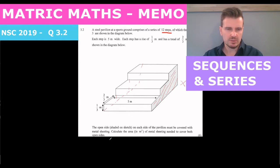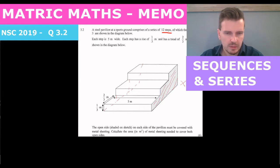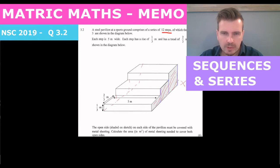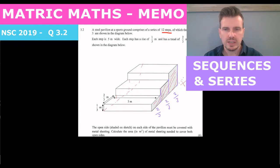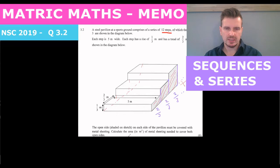Each of these steps is two thirds of a meter wide, and there are going to be 12 of them, because there are 12 steps. The height of each of them: the first one's height is going to be one third, the next one is going to be two thirds, and the next one is going to be three thirds, which is one.